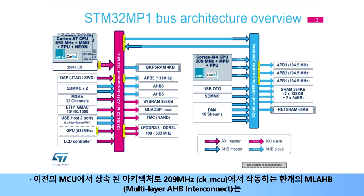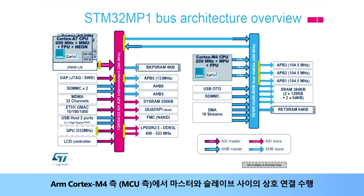One multi-layer AHB interconnect, or MLAHB, performs interconnection between masters and slaves on the ARM Cortex-M4 side, called the MCU side, with an architecture inherited from former MCU designs and operating at 209 MHz (CK_MCU).